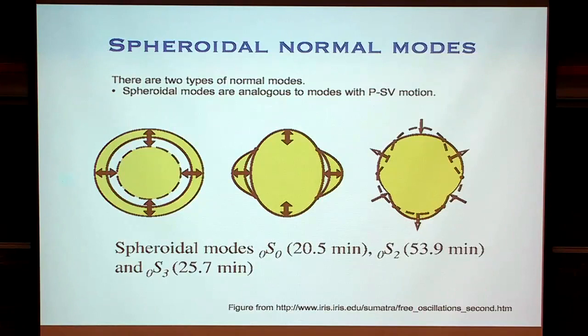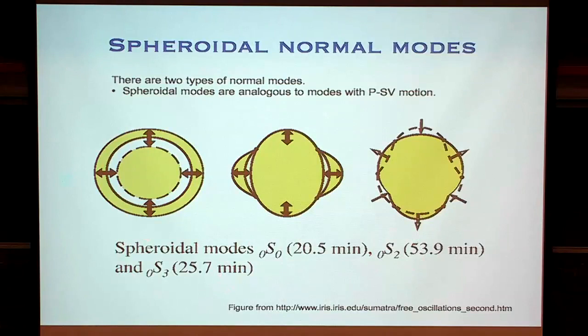We also have 0S3. When I've labelled these I've got 0S0, 0S2, and 0S3 — I'll define what those numbers mean later. Essentially you can see they're getting more complicated. The one ending in 0 is really simple; 0S2 is doing different things at different places on the surface; and 0S3's behaviour is even more complicated, moving in and out at different places on the surface. These are some really simple spheroidal normal modes.